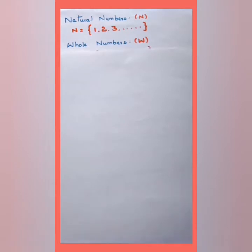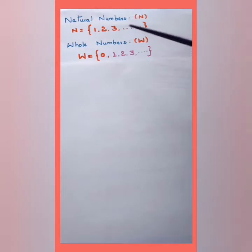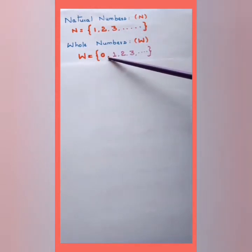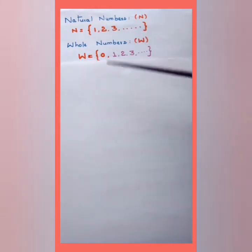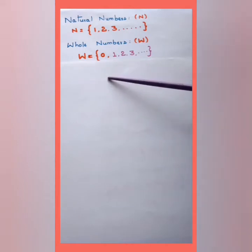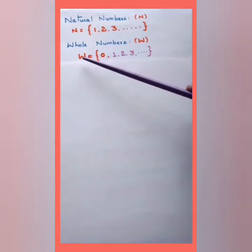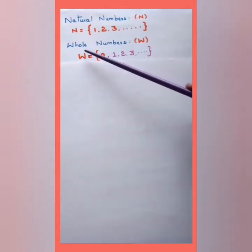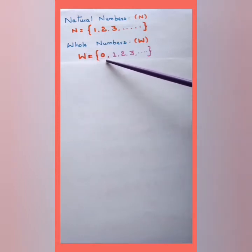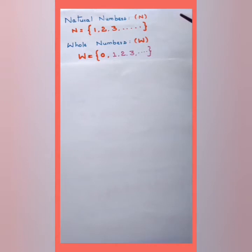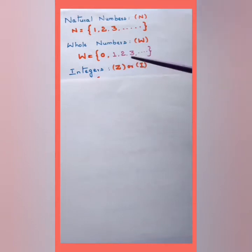The natural numbers along with zero are called whole numbers. When we say 'whole' we represent the full thing. We write the whole number set as W = {0, 1, 2, 3, 4, 5, ...} and it goes on. Next are integers, represented by the capital letter Z or I.